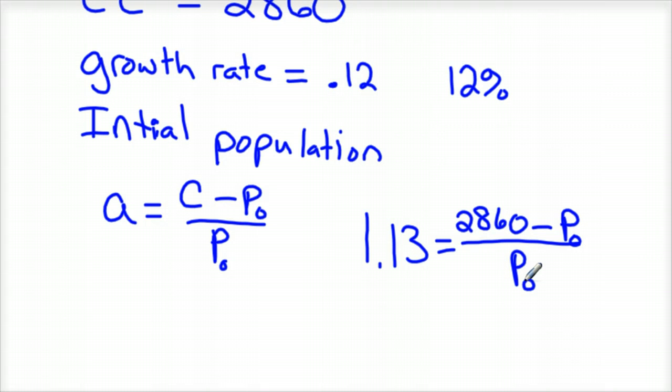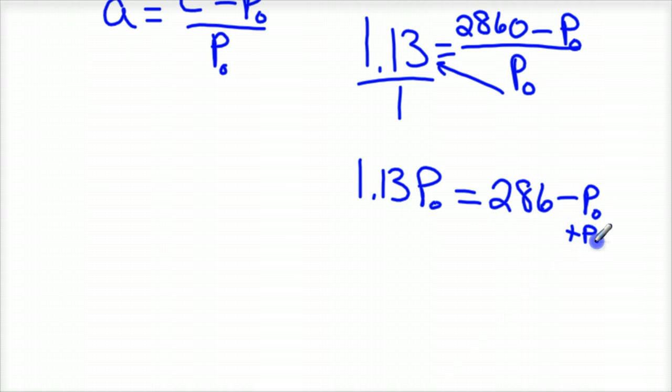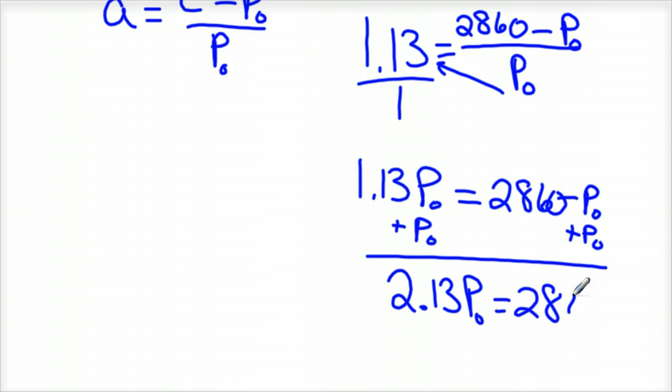And so what you're going to do here is you will go ahead and solve this for P sub 0. So if we solve this thing for P sub 0, I'll put this over 1 and cross multiply. So I've got 1.13 times your initial population equals 2,860 minus your initial population. So we'll add this initial population over. And you would have now 2.13 initial population equals, whoops, I forgot the 0, 2,860.